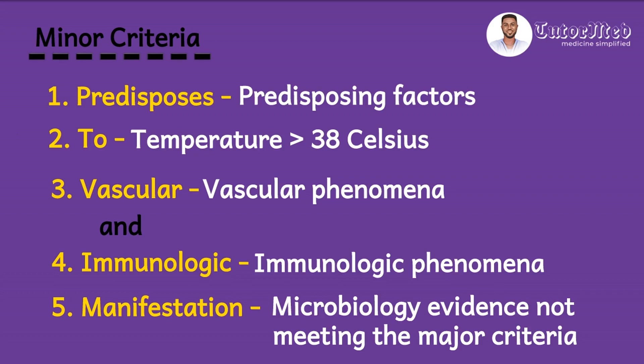So these are the components of the modified Dukes criteria. For the major criteria: positive blood culture for the typical organisms causing infective endocarditis, and echocardiographic evidence of infective endocarditis. For the minor criteria: predisposing factors, fever greater than 38 degrees Celsius, vascular phenomena, immunologic phenomena, and microbiology evidence not meeting the major criteria.